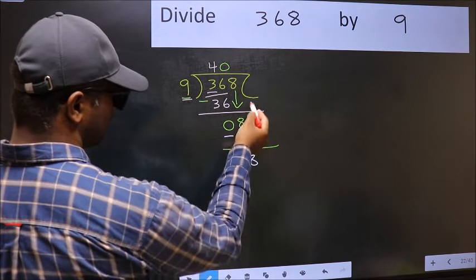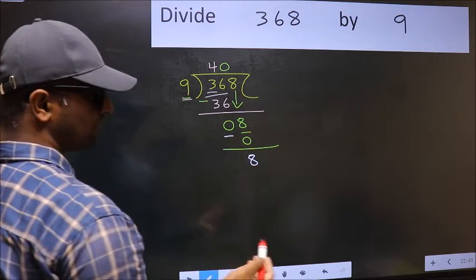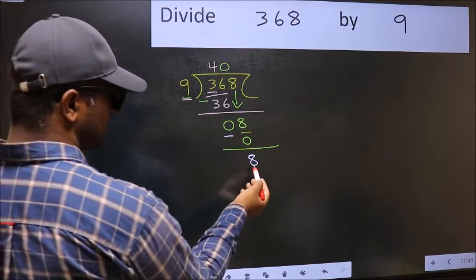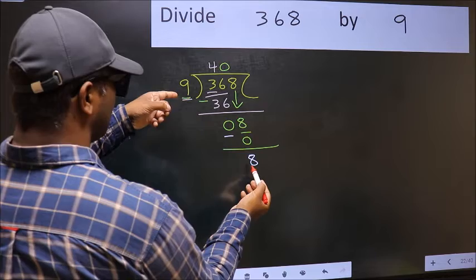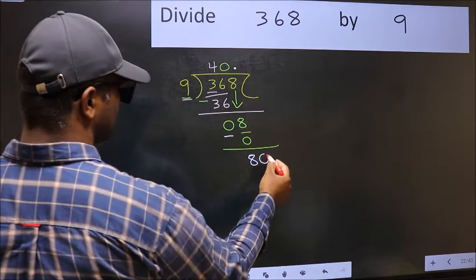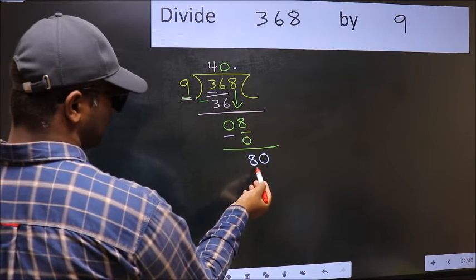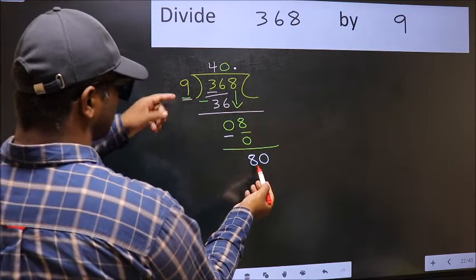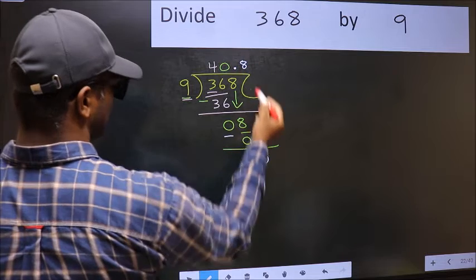Over here, we did not bring any number down. And 8 is smaller than 9. So, now you can put dot and take 0. So, 80. A number close to 80 in 9 table is 9, 8, 72.